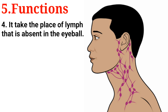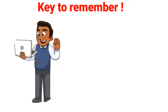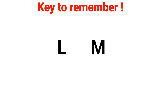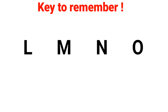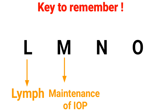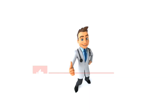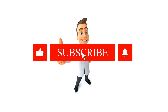Finally, it takes the place of lymph that is absent in the eyeball. Here is the key to easily remember all the functions of aqueous humor. In the English alphabet, L, M, N, O are sequential letters. So you can use them to remember the functions: L stands for lymph — it replaces lymph absent in the eye; M stands for maintenance of intraocular pressure; N stands for nutrition it provides to the cornea and lens; and O stands for optical transparency. Make sure to like, subscribe to the channel, and turn on notifications for more videos.